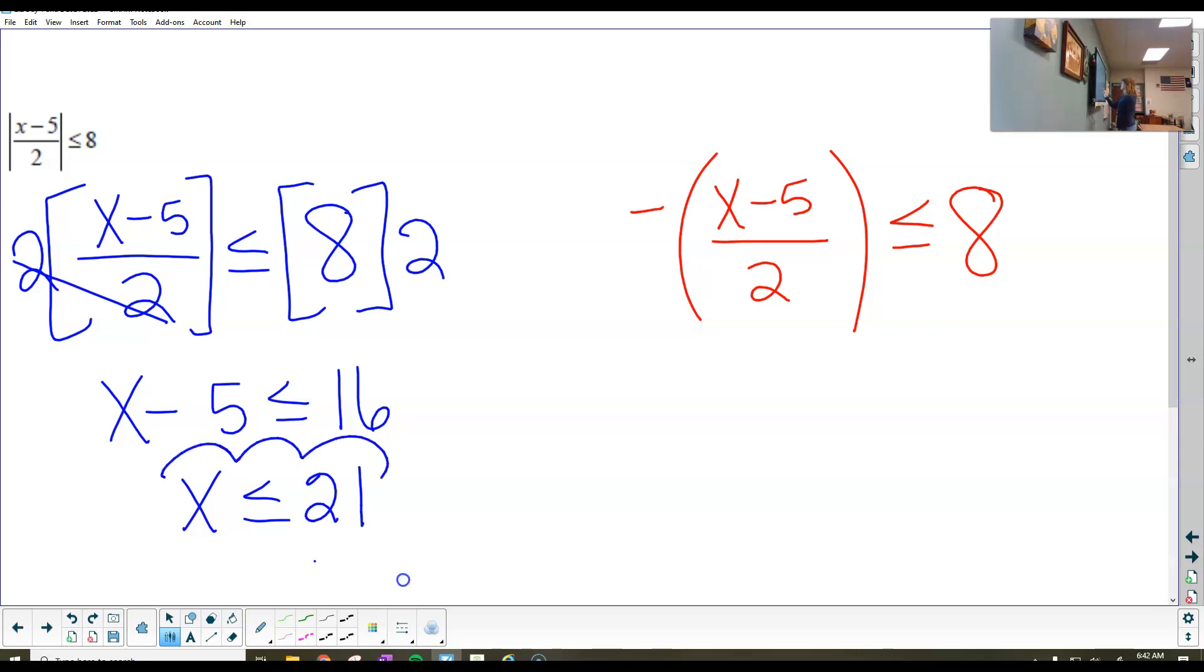x is going to be less than or equal to 21. I'm just going to put a cloud around that because that's not really my final answer, but it's important. Now let's take a look at what's going on with your opposite. With your opposite, I need to remember that I have to distribute the negative. Never, ever, ever distribute anything to a denominator. We are going to distribute the negative to both pieces at the top, never in the denominator of any fraction.